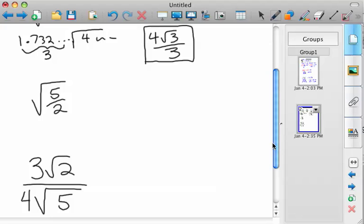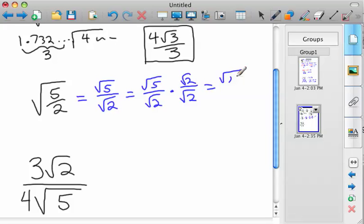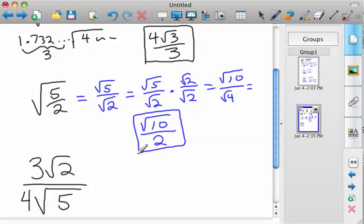Okay, root 5 divided by root 2. Now that we know why we have to do this, we'll just go ahead and rationalize it. We multiply by the special number 1, which in our case is going to be root 2 divided by root 2. So we'd have root 10 divided by root 4. Well, root 10 is an irrational number, so we'll leave it. Root 4 is a perfect square, so it's rationalized to root 10 divided by 2. We don't want a radical in the denominator.